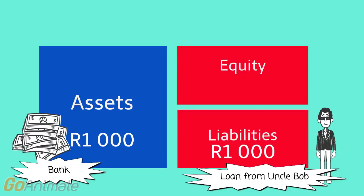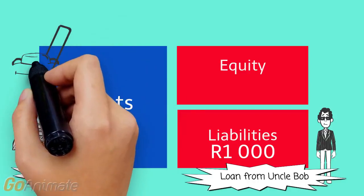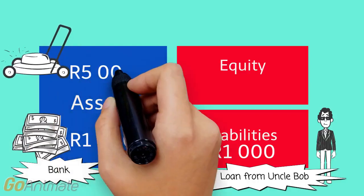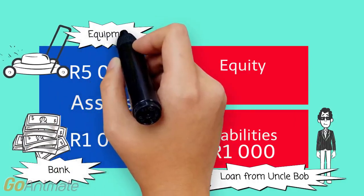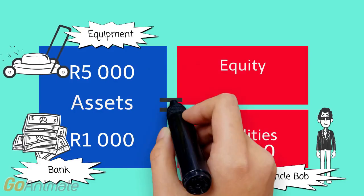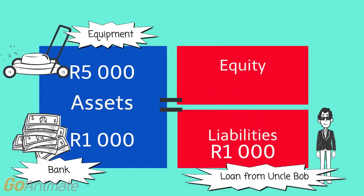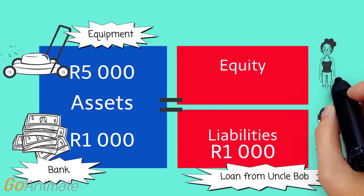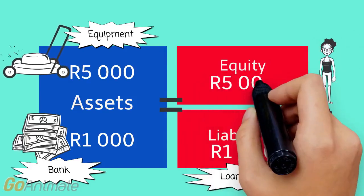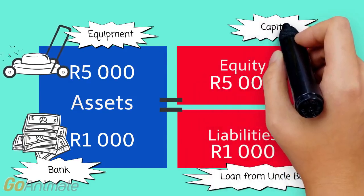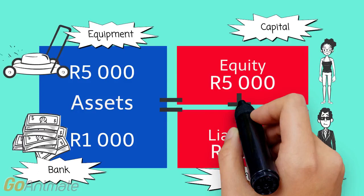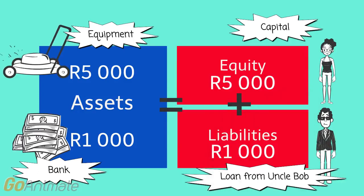So if we put these two transactions together, we see that Nandi now has two assets: 1,000 rand in the bank and equipment of 5,000. She has a loan from Uncle Bob — a liability of 1,000 — and her capital in the business is 5,000. So her assets equal equity plus liabilities.